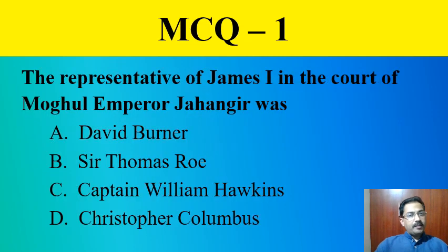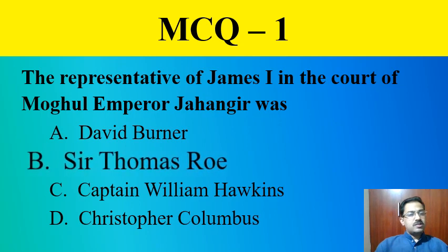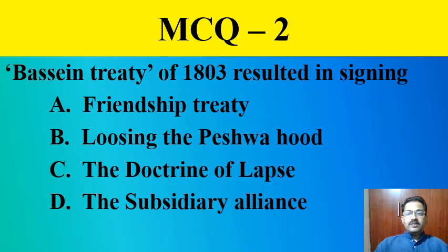The first question: The representative of James I in the court of Mughal Emperor Jahangir was — A. David Burner, B. Sir Thomas Roe, C. Captain William Hawkins, D. Christopher Columbus. The correct answer is Sir Thomas Roe.